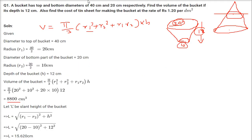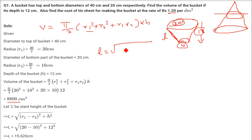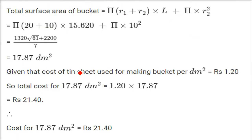The next part is to find the cost of the tin sheet for making the bucket at a given rate per decimetre square. To find the cost of the sheet, we need to find the slant height. The formula is: L = √[(r1 − r2)² + h²], where h is 12.